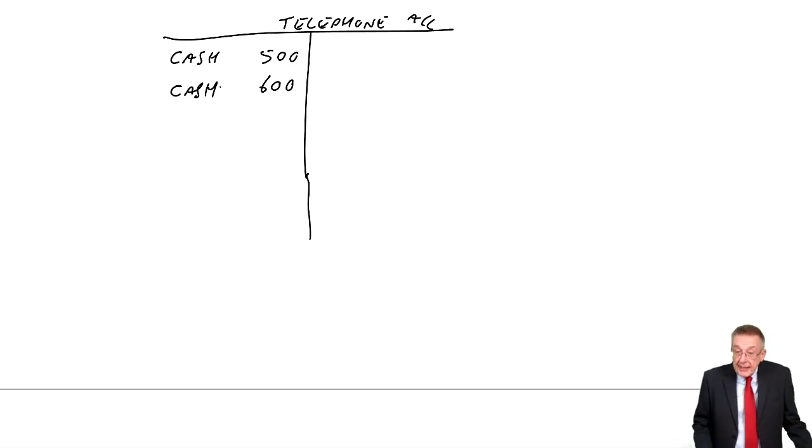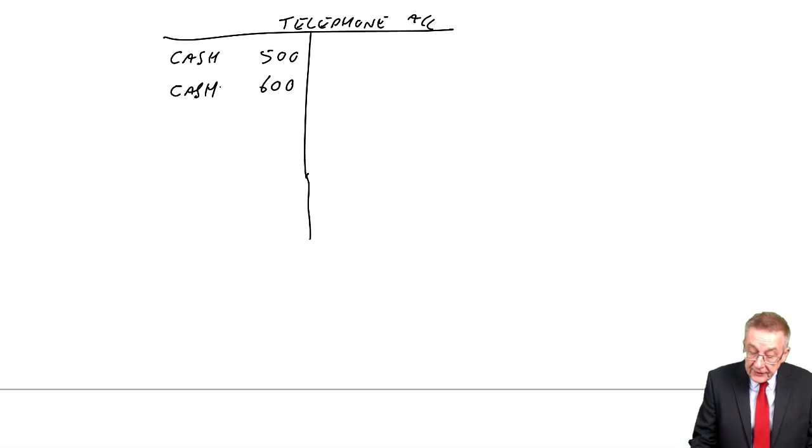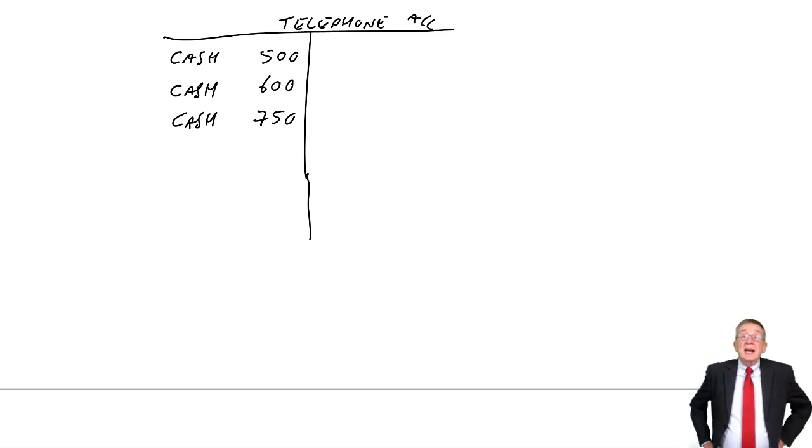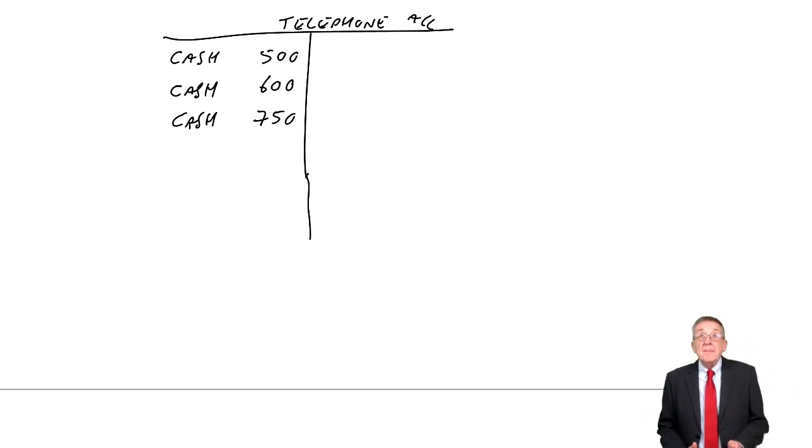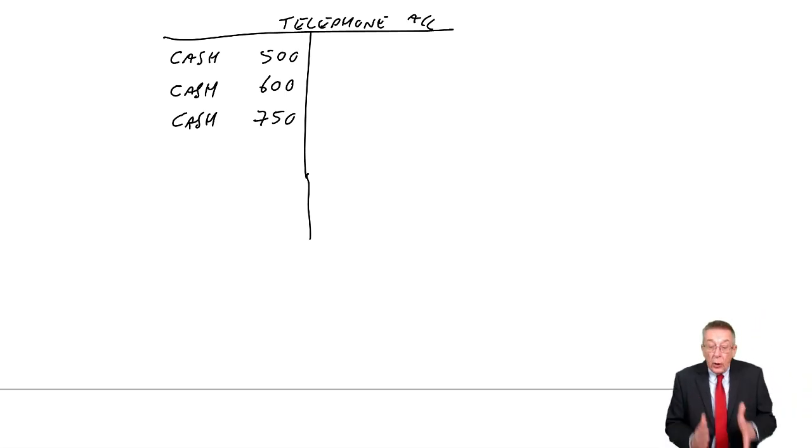14th of January, still in our year, year to March, we pay 750, credit cash, debit telephone. And that's all the bookkeeper will have done. I know there's an estimated amount, but the bookkeeper's job, all the bookkeeper does is record every time we make a payment. And that's all we've paid.